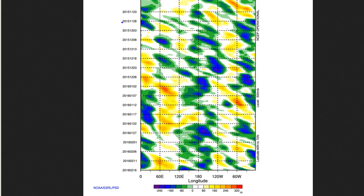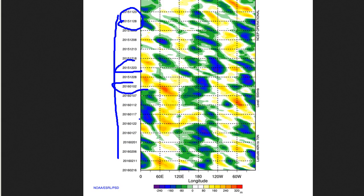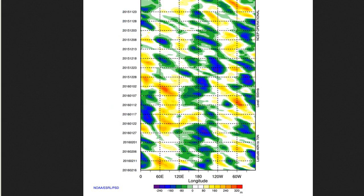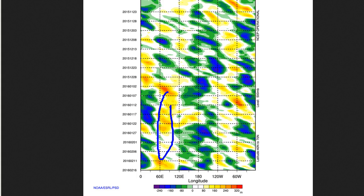On the y-axis we have dates. This is November 2015, going down through Christmas, New Year's, and Valentine's Day — so the year progresses from top to bottom. The colors we're seeing are height anomalies at 500 millibars, and we can basically boil that down to troughs and ridges. Anything that's blue is going to be troughs; anything that's yellow and red is going to be ridges.